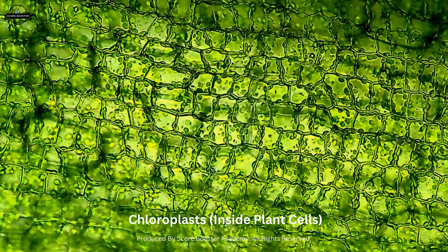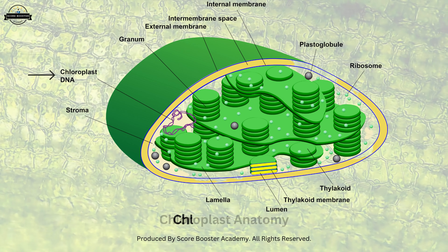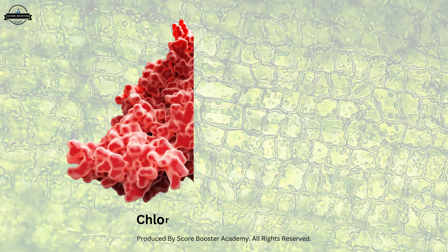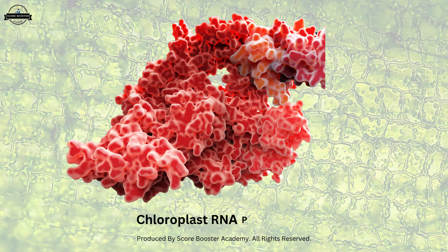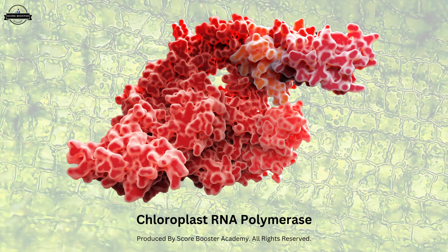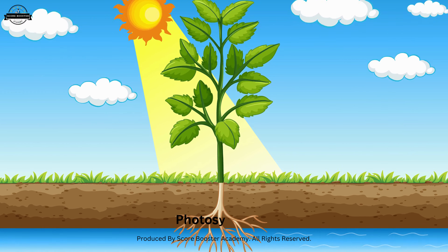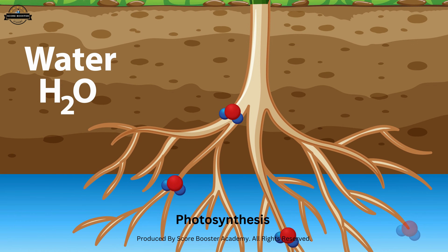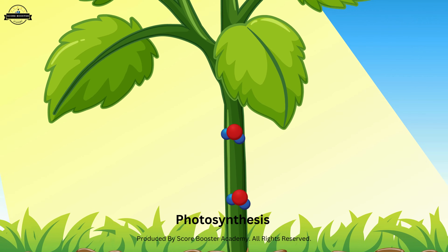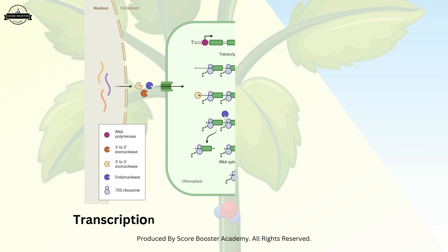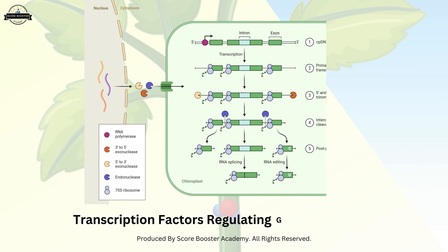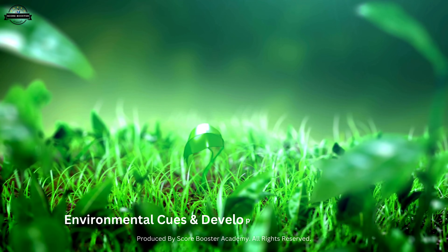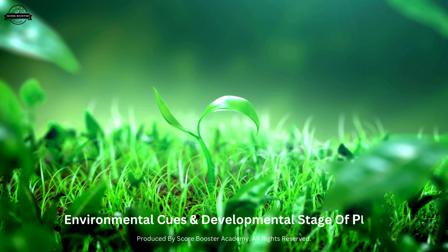Chloroplasts, found in plant cells, also contain their own DNA and transcription machinery. Chloroplast RNA polymerase is responsible for transcribing genes involved in photosynthesis and other chloroplast functions. Like mitochondria, chloroplasts have transcription factors that regulate gene expression in response to environmental cues and the developmental stage of the plant.